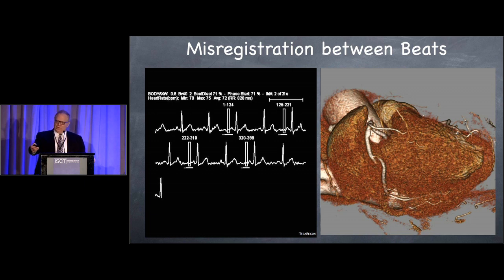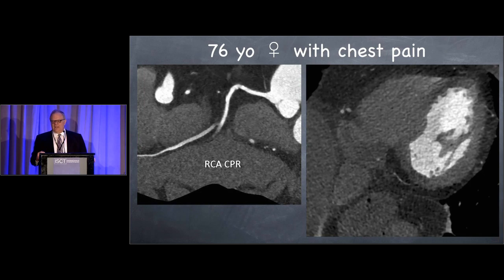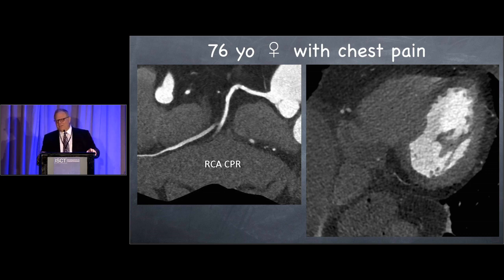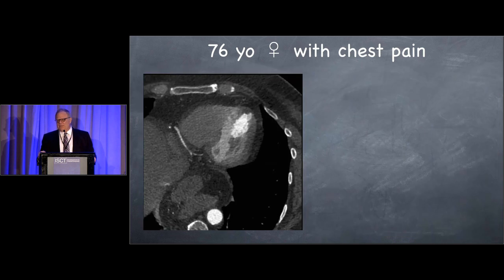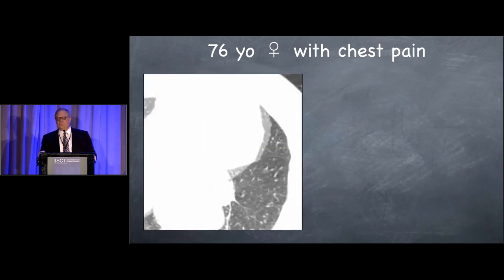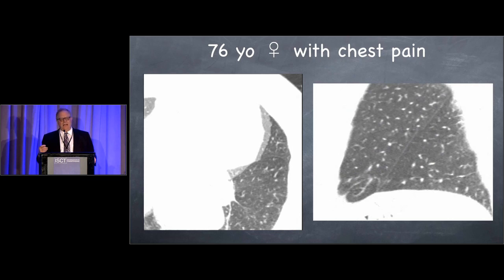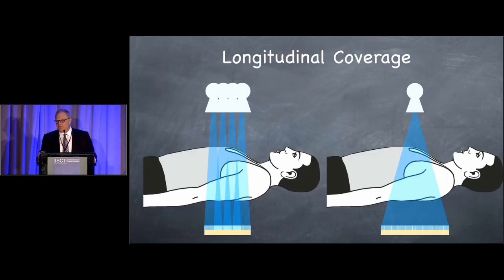Here is another patient where I want to draw your attention to the right coronary artery, where it looks like there is a blind-ending branch that might be occluded. But if you look critically on the curved reformation, we see two apparent right coronary arteries right at the site of that branching point on the transverse section. The lung window — a great way to see motion — shows how much misregistration there is. This is an example of patient motion occurring at the interface on a prospectively triggered scan.